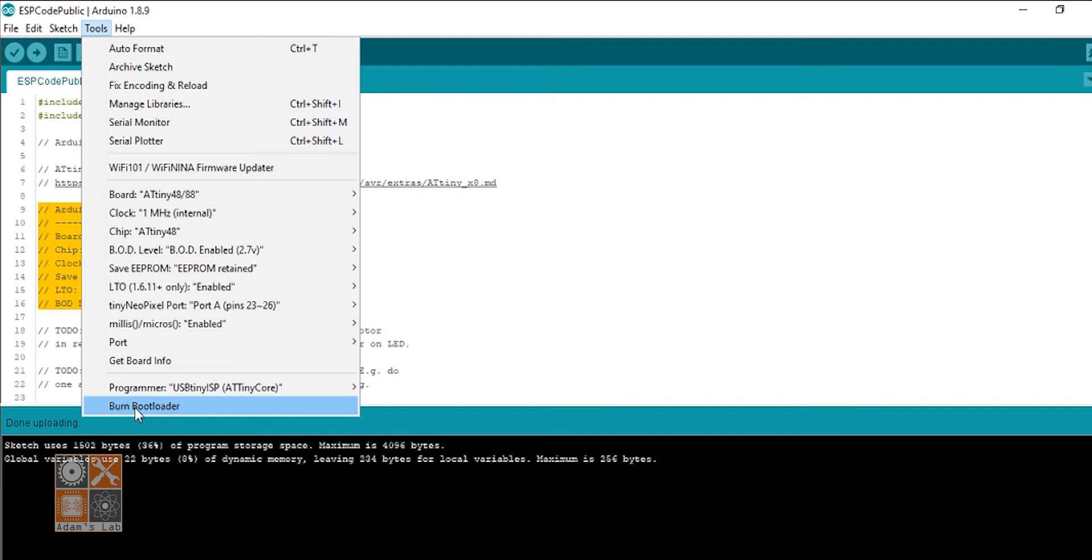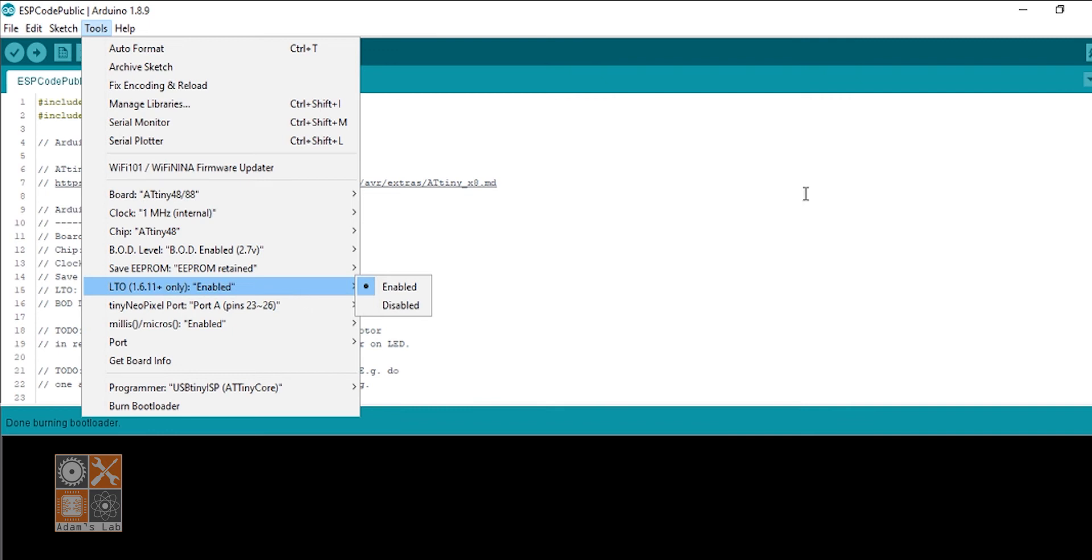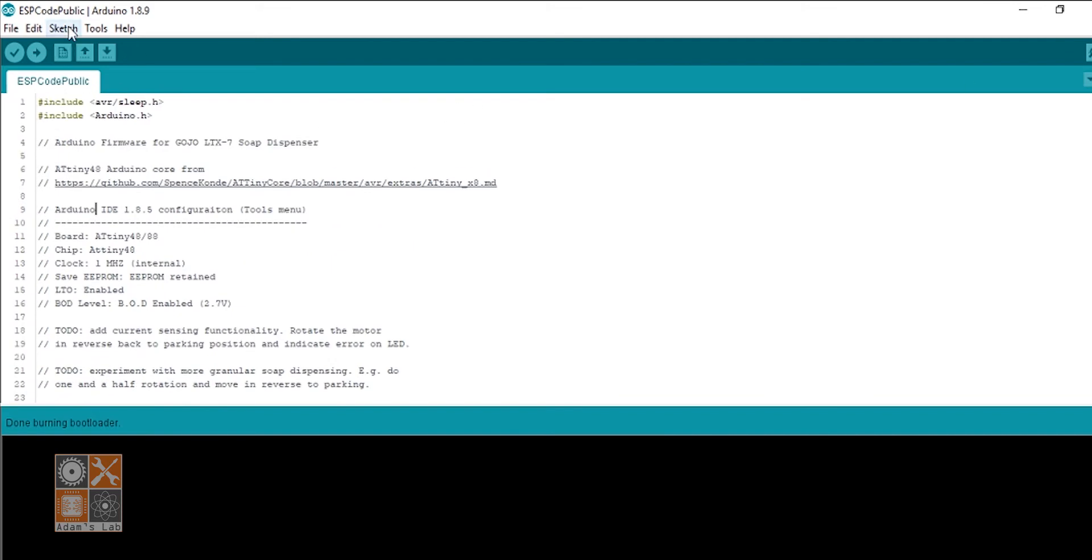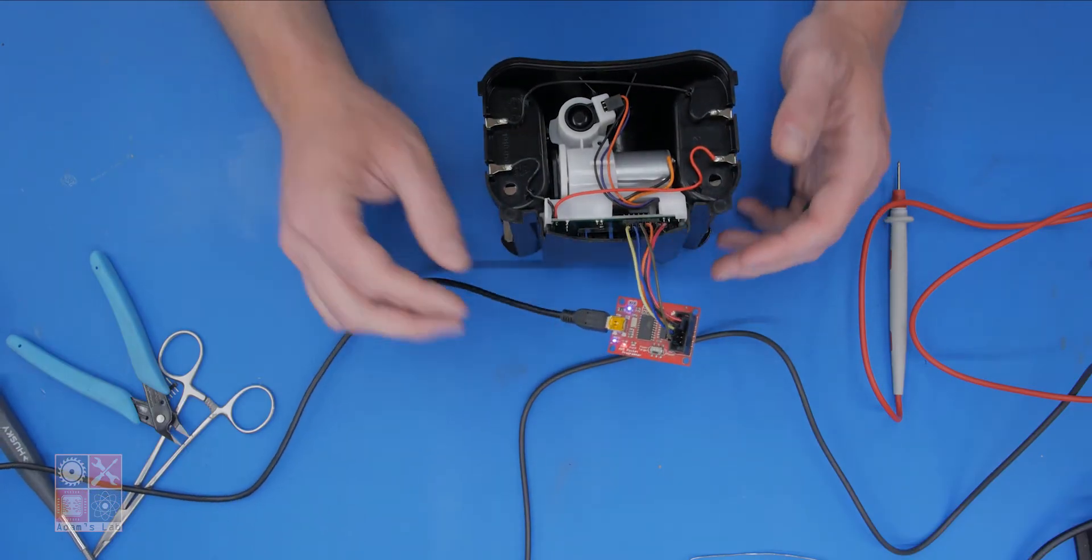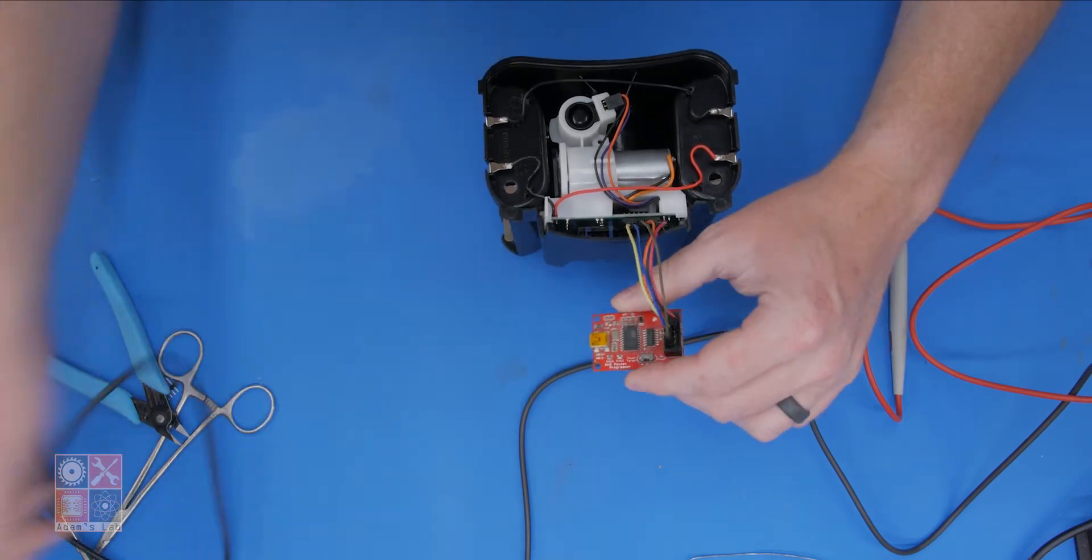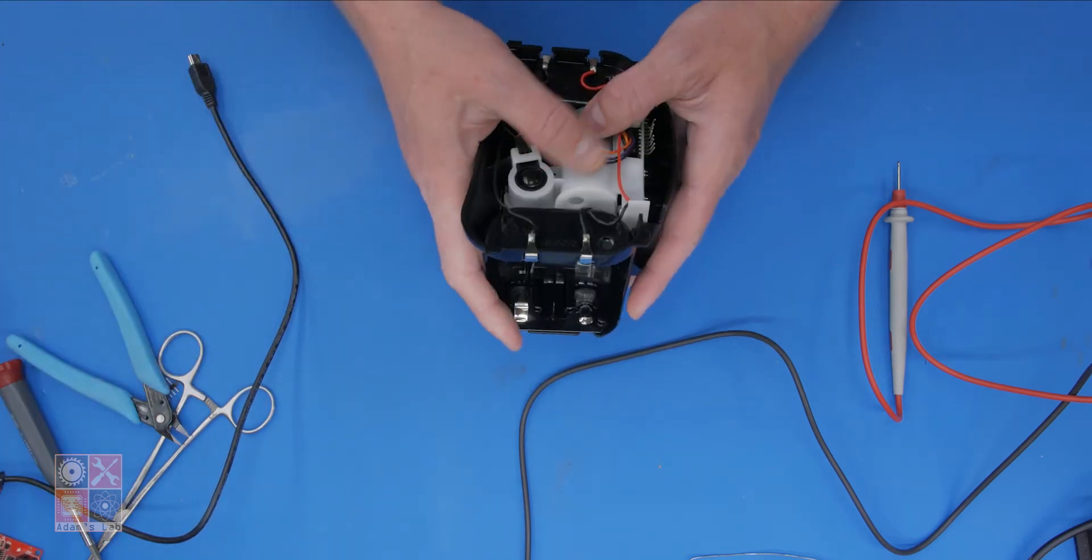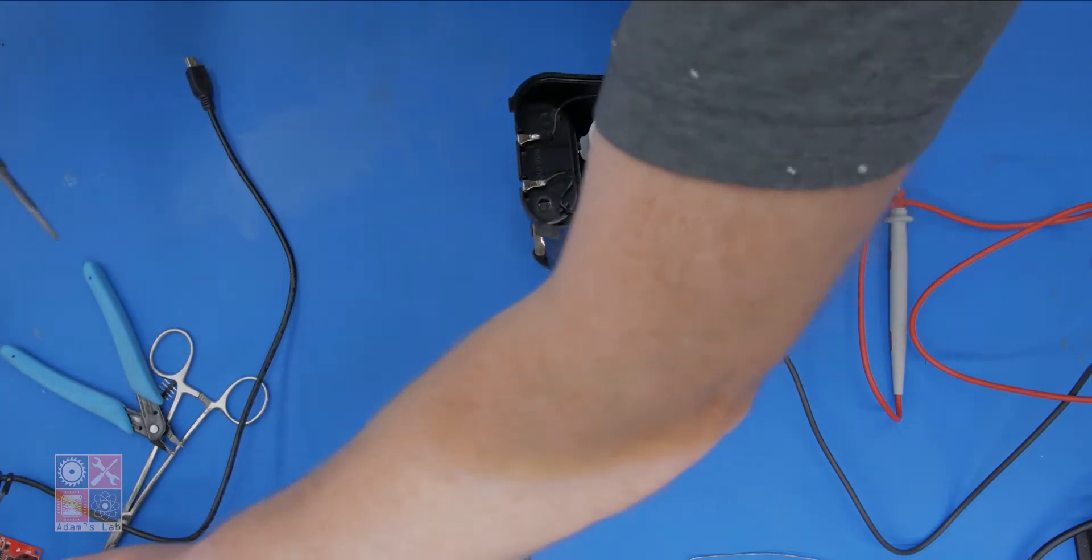Once you have that set and your programmer is hooked up and ready to go, I would select the Burn Bootloader option. It just takes two seconds, burns bootloader. Then once you have the sketch in there and you have the settings set under the Tools menu for the chip, and you've maybe made any changes you wanted to make to the program, the only thing left to do is, unlike a normal sketch where you'd select the Upload option, because we're using an external programmer, we come up to Sketch, select the Upload Using Programmer option. It doesn't take any time at all and it's uploaded the sketch.